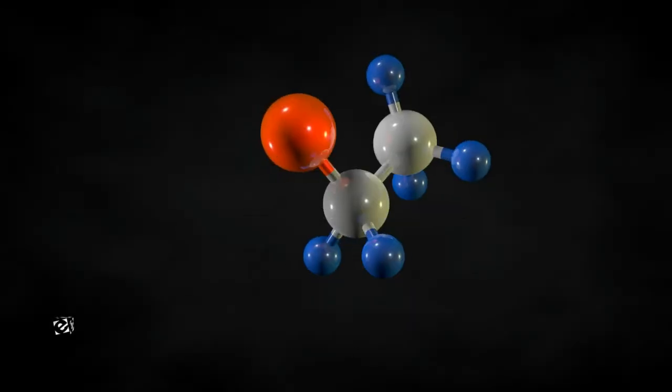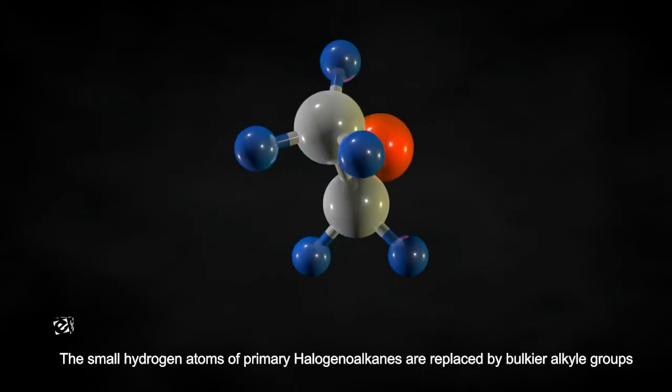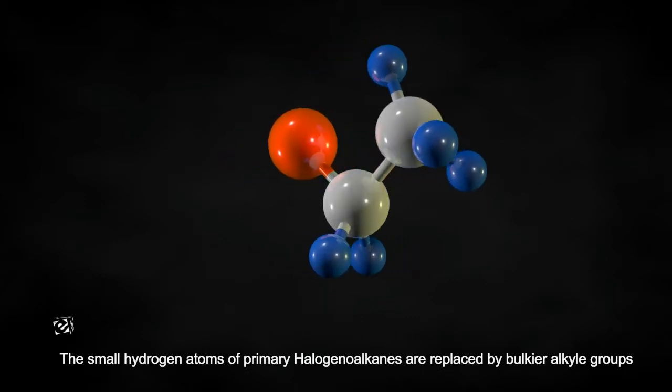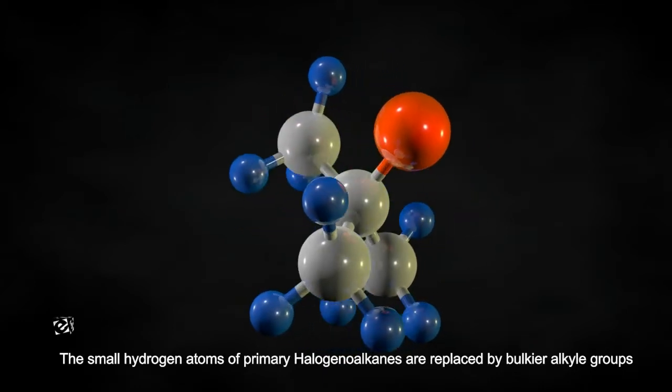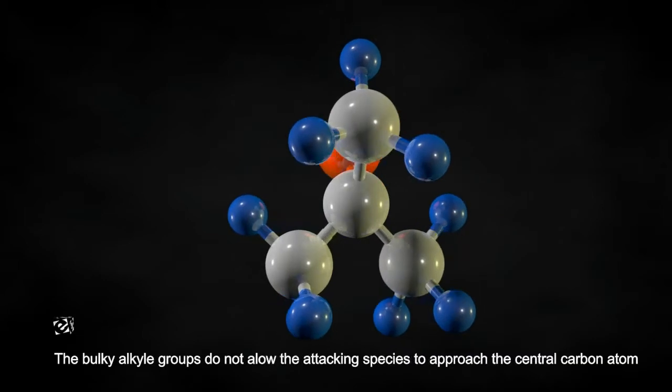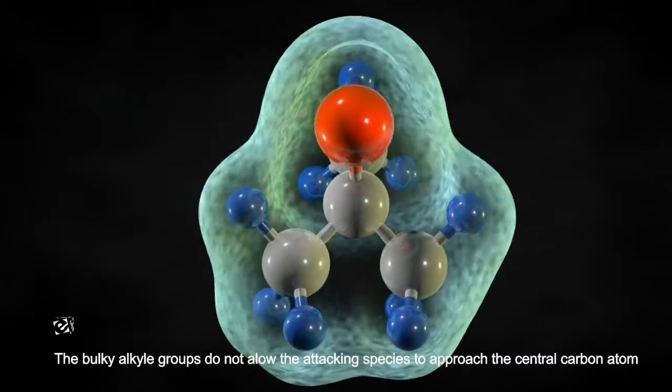In tertiary halogenoalkanes, the smaller hydrogen atoms in primary halogenoalkanes are replaced by bulkier alkyl groups. The bulkier alkyl groups do not allow the attacking species to approach the central carbon atom.